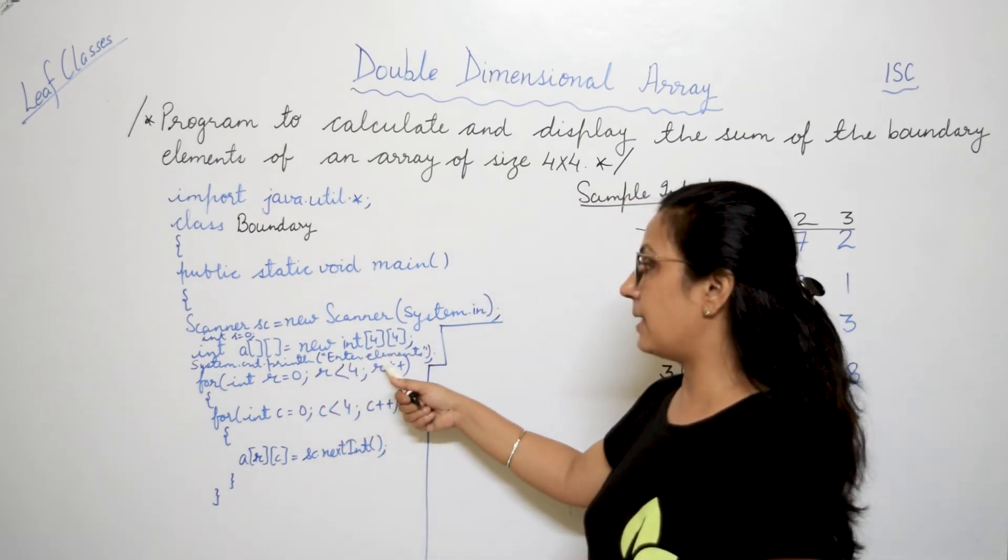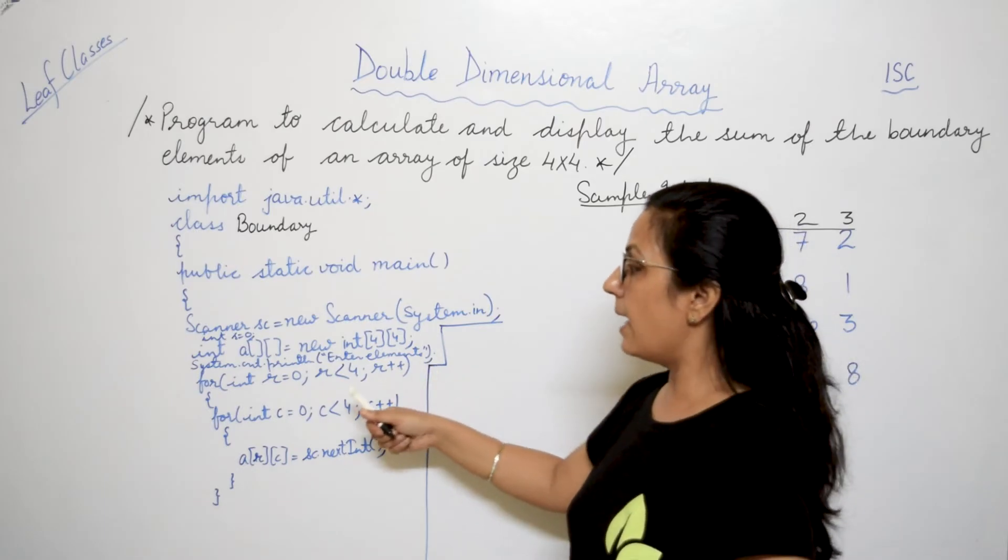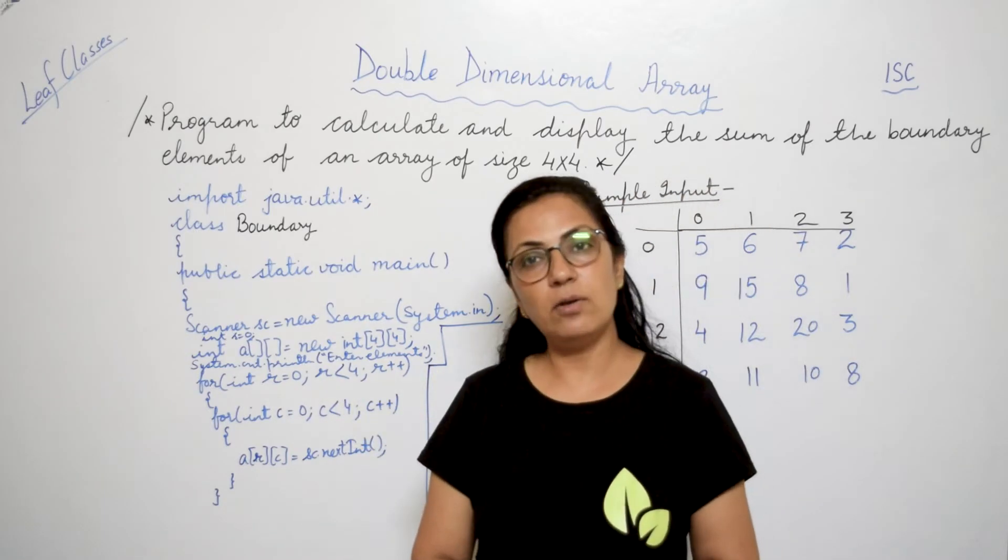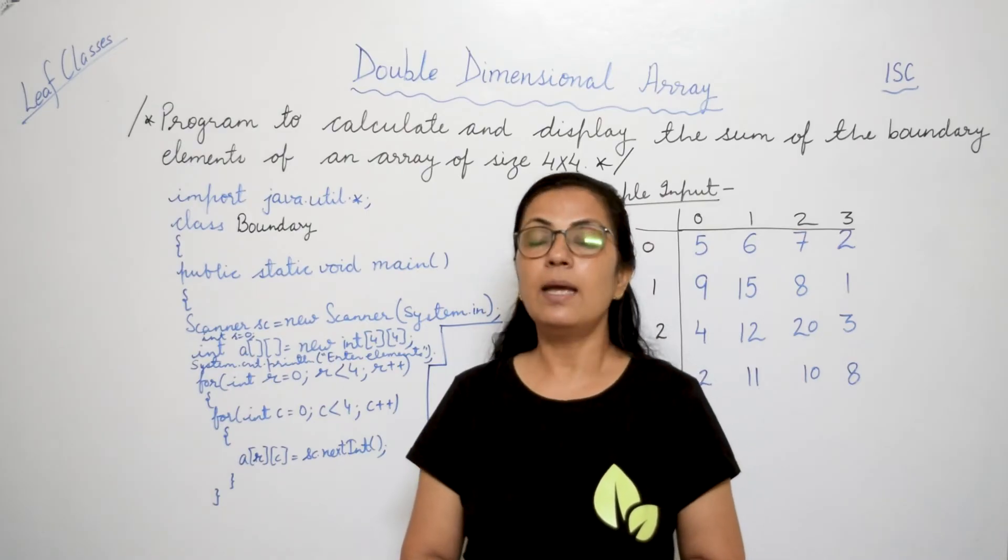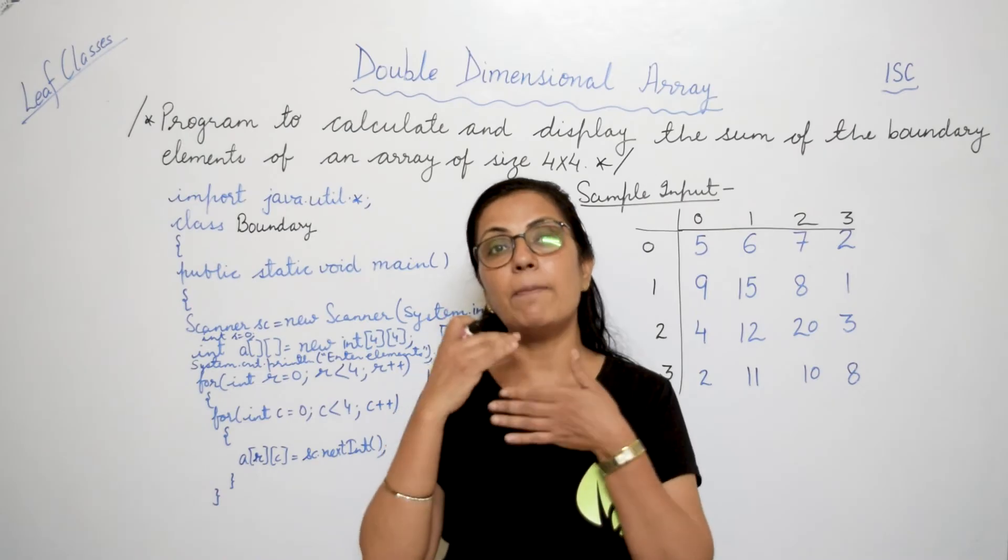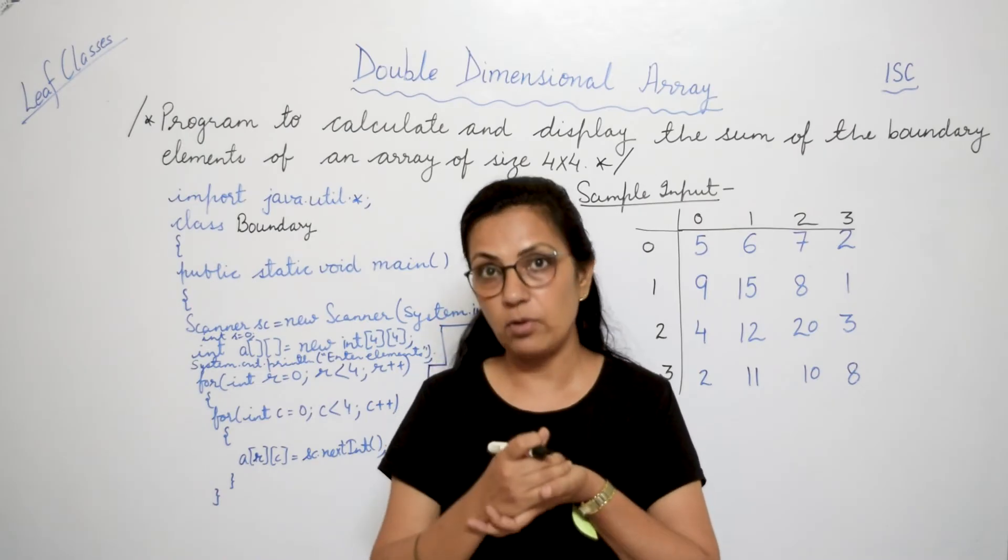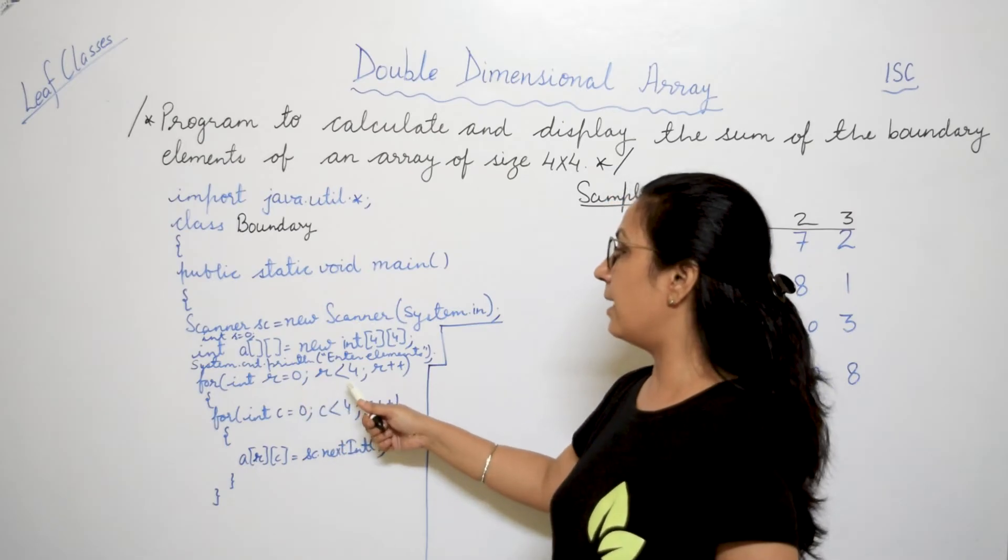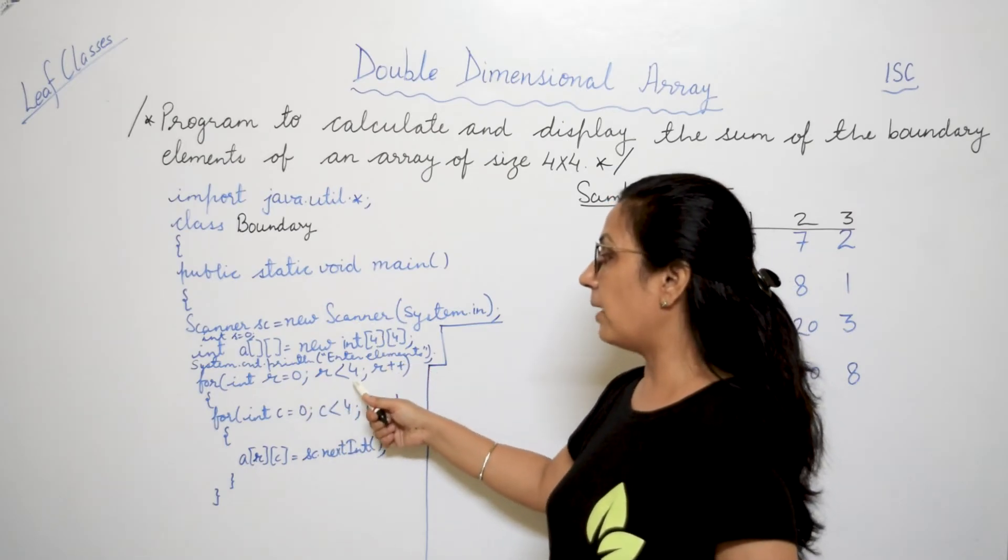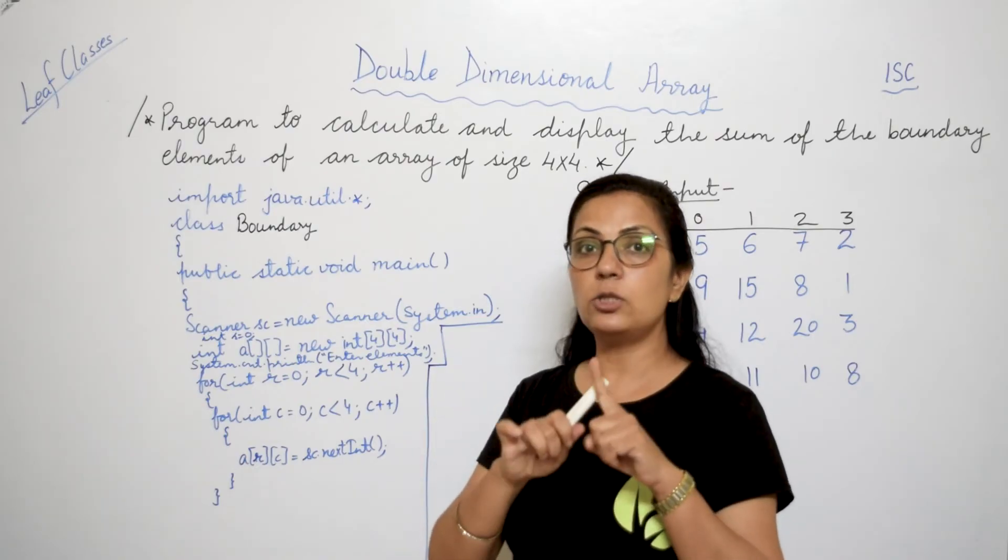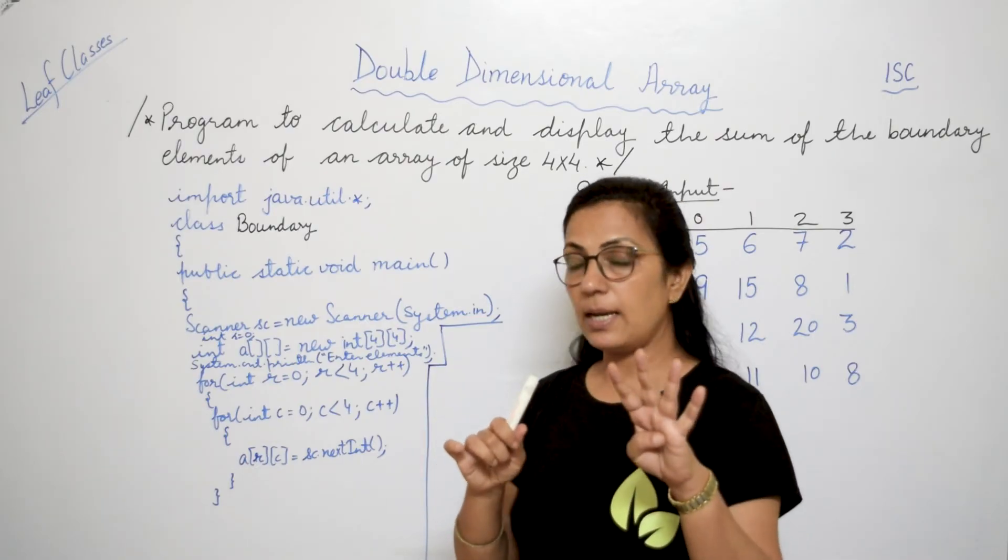Then I have written the print statement to enter the elements, and then we have taken nested loop. Children, always in double dimensional array, nested loop will be used for input because we have a number of rows and a number of columns. So r equals to 0, r less than 4. Size is 4. I have taken less than 4 because it is starting from 0. So 0, 1, 2, 3. Four times.